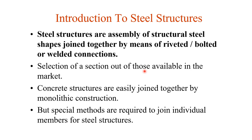Concrete structures are easily joined together by monolithic construction — the steel bars of one member extend into another. But in steel structures that is different; special methods are required to join individual members. The three methods are riveted, bolted, and welded connections.